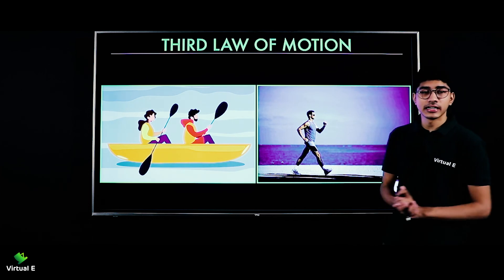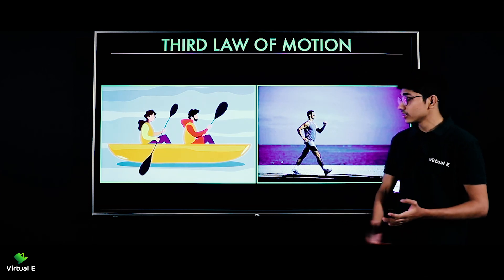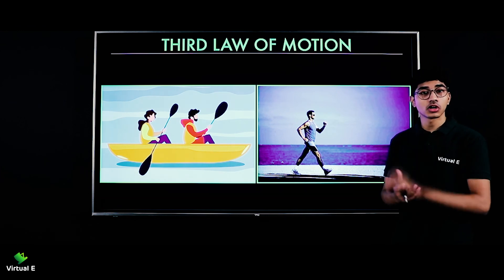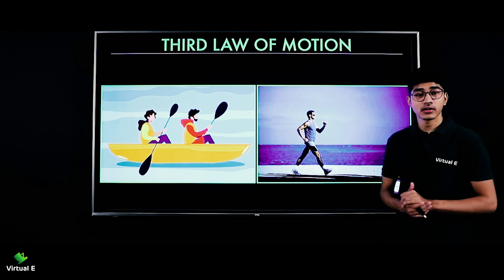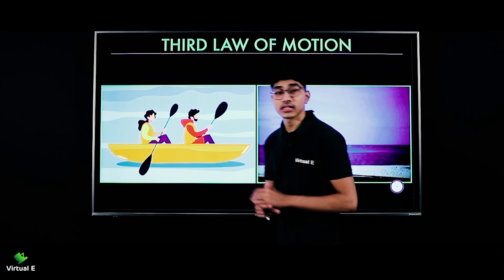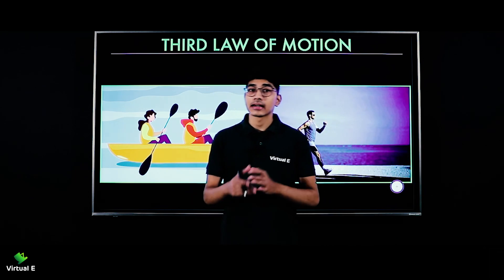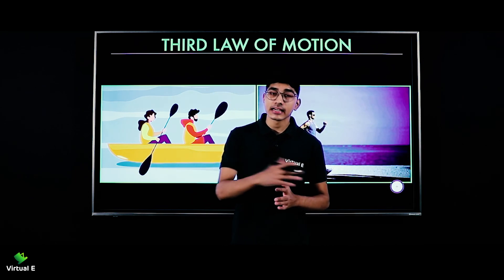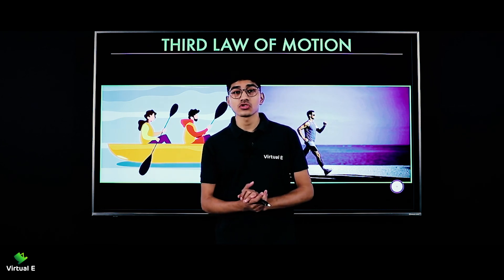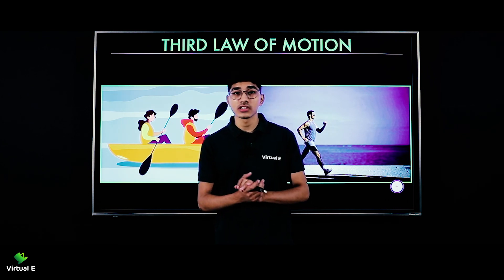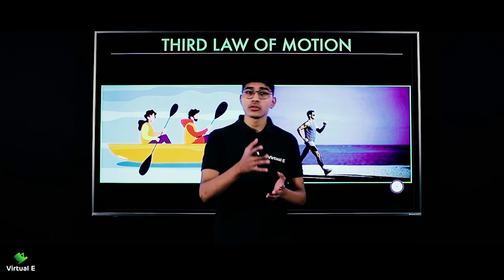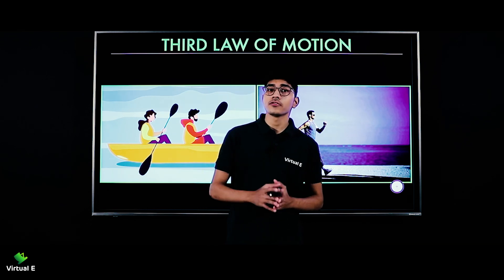And the best relatable example of the third law of motion is walking itself. You are able to walk because of the third law. When I walk, I am pushing the ground behind me. I am applying a force on the ground in the backward direction, and the ground also applies a force equal and opposite on me — that's why I am able to move forward. So these were our examples of the third law of motion.